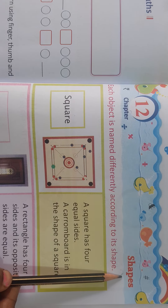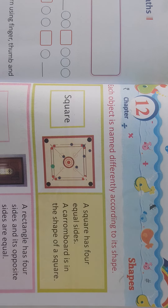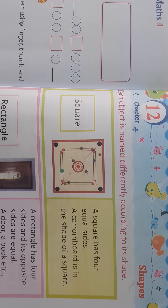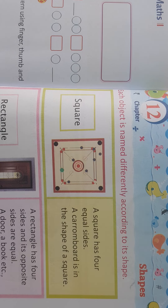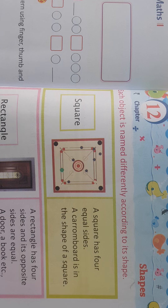Today I will tell you about shapes. Children, our shapes are of 2 types. The first type is two-dimensional shapes, which we also call plane shapes — we draw them by drawing lines. And the second type is solid shapes, or three-dimensional shapes.